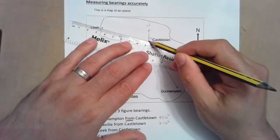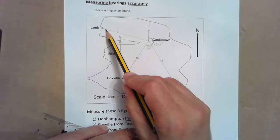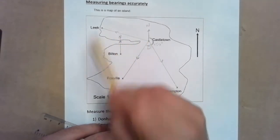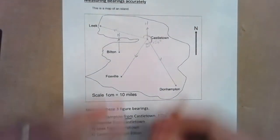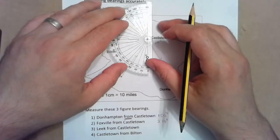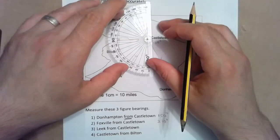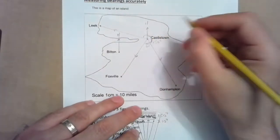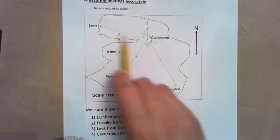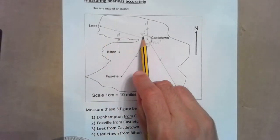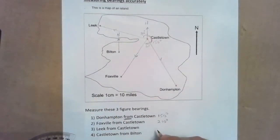Leek from Castletown — Leek is here. Drawing a straight line from Castletown we're traveling in a northwest direction. I'm going to measure this bit here, which is about 70 degrees. So Leek from Castletown appears to be 70 degrees.